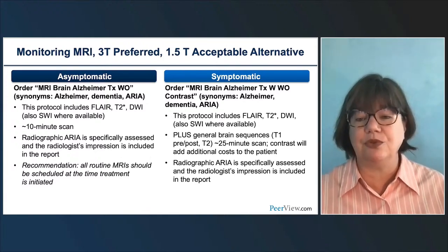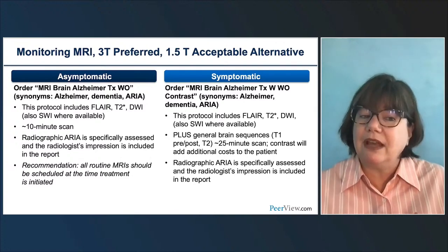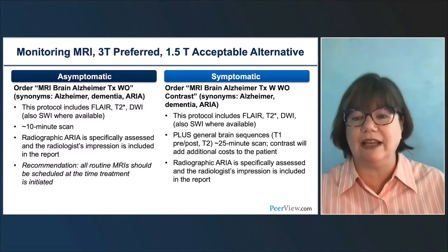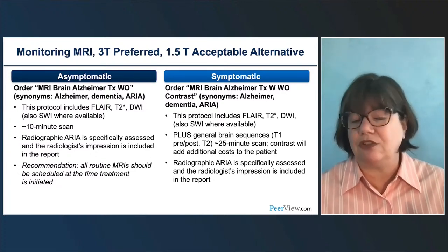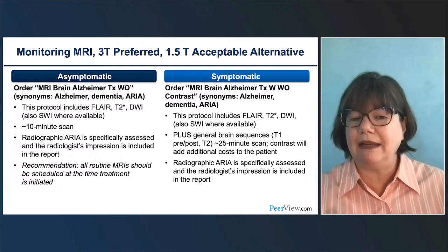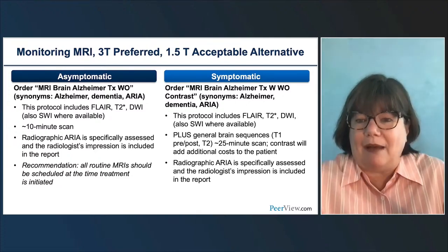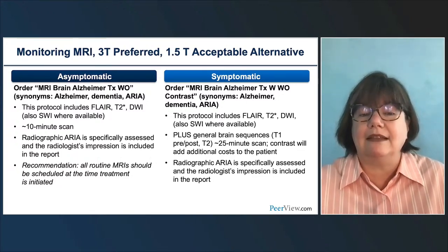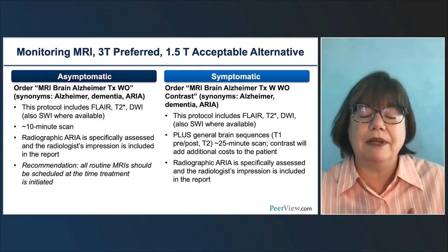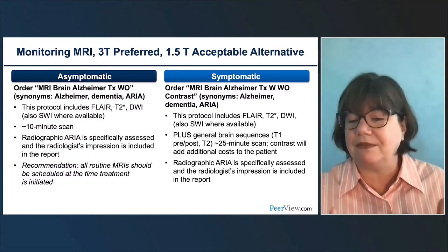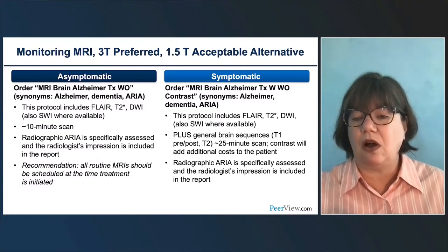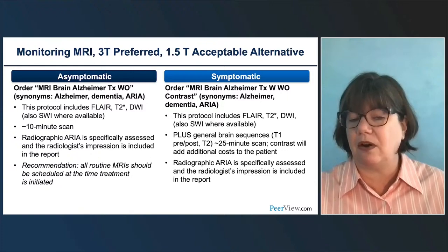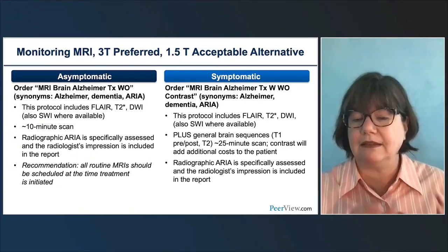In our practice we've streamlined this: if asymptomatic, we're looking for three findings—vasogenic edema on FLAIR, hemorrhages on T2-star or SWI, and diffusion to rule out infarct. Those three sequences take about 10 minutes, allowing you to squeeze these patients into almost any facility. If symptomatic, we do an enlarged protocol because with symptoms like headache, dizziness, and confusion you have a broad differential. We recommend contrast just as for any symptomatic patient, but ensure the consistent monitoring sequences are embedded within it so you can compare apples to apples. A full symptomatic protocol runs about 25 minutes.